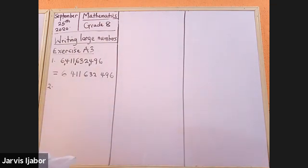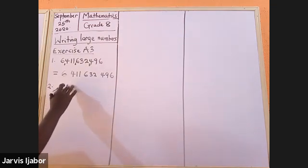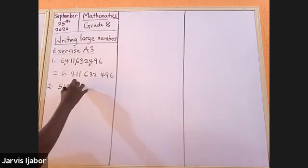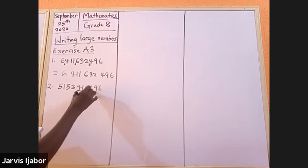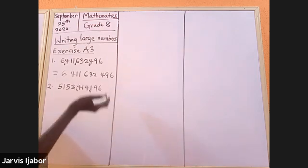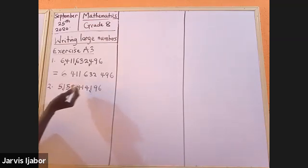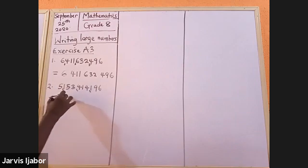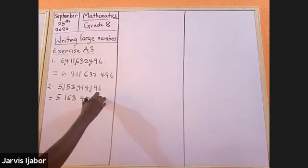Number two — I guess you've already done this, so what I'm trying to do is more like a revision. Five, one, five, three, four, one, four, one, nine, six. You space again; you group them in threes and then move towards your left. This will be: five, space, space, space.